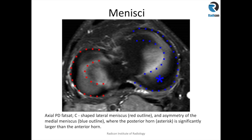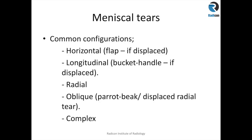Meniscal tears can be defined into four different types: horizontal tears, longitudinal tears, radial tears, oblique tears, and complex tears. Complex tears occur whenever there is a combination of more than one type of tear in a meniscus.